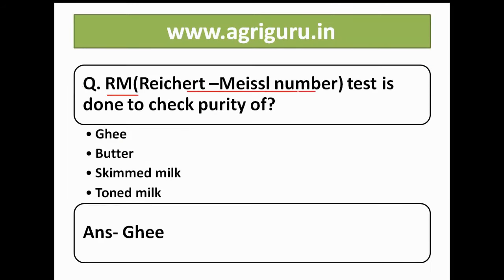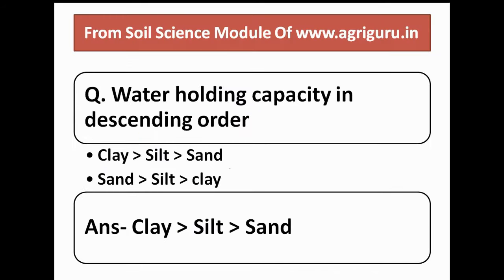The next question is: RM test is done to check the purity of which product? The options are ghee, butter, skimmed milk, and toned milk. The correct answer is ghee.